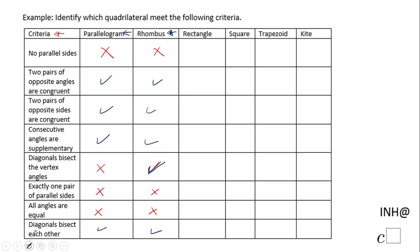Next is the rectangle. The rectangle is a special type of parallelogram, so I'll check those same four parallelogram properties. For the remaining: 'No parallel sides' — obviously doesn't work. 'Diagonals bisect the vertex angles' — doesn't work for a rectangle unless it's a special type, like a square. 'Exactly one pair of parallel sides' — no, we have two pairs. 'All angles are equal' — yes, that works; all angles are 90 degrees.